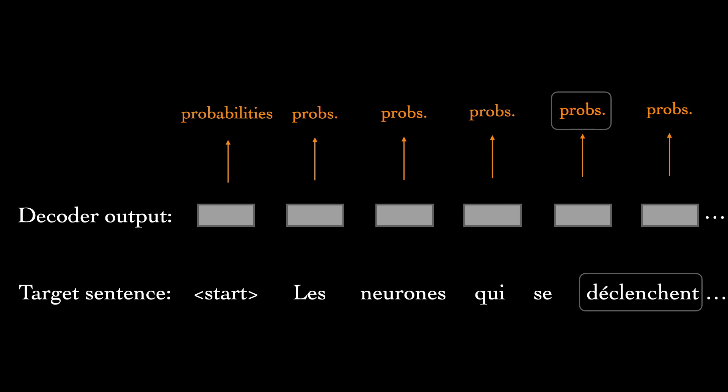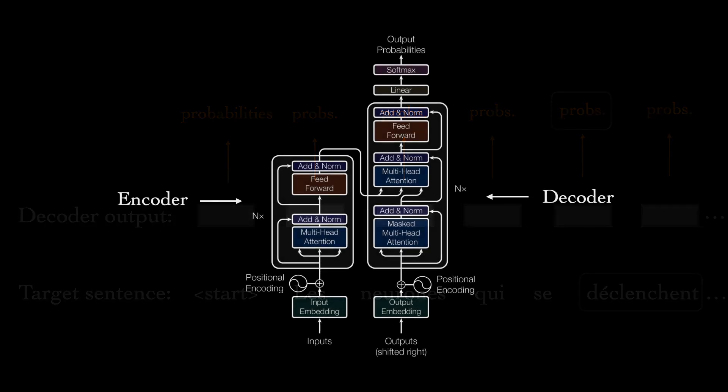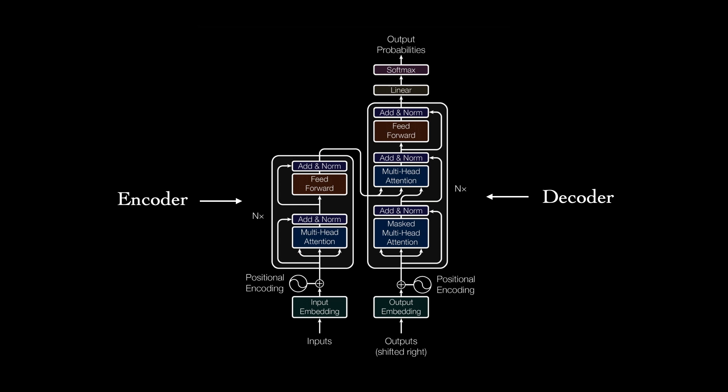One quick thing to add about the transformer architecture is that, depending on your application, you don't necessarily need both the encoder and decoder. For example, if you're only trying to generate sequences, a decoder-only architecture may be sufficient. If you're trying to learn a rich sequence representation for a classification task, maybe you'll just use the encoder portion.